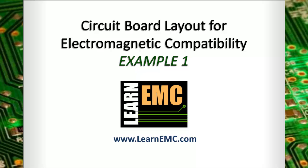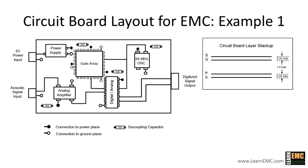This example is brought to you by Learn EMC. Here's an example of a printed circuit board that's likely to fail radiated emissions requirements. In this video, we'll show you how to change the layout of this board so that radiated emissions requirements are easily met. We'll also make some changes that improve signal integrity on the board.